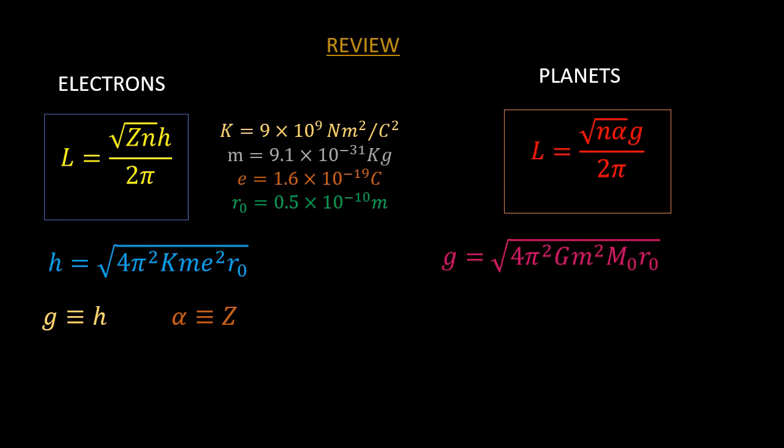Z is the atomic number of an atom or element, which is the number of protons contained in the nucleus of the atom. This is also equal to the number of electrons in that atom given that the atom is neutral.